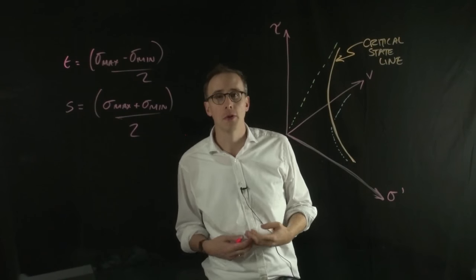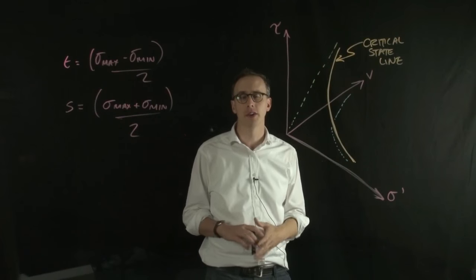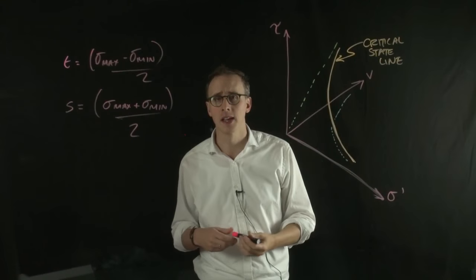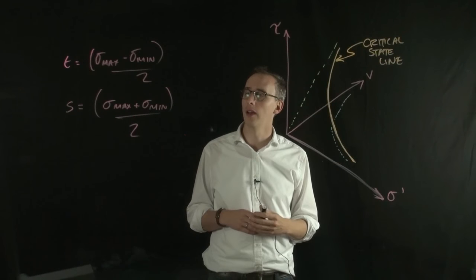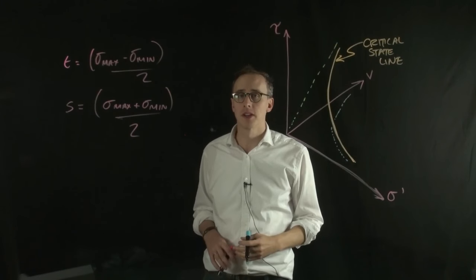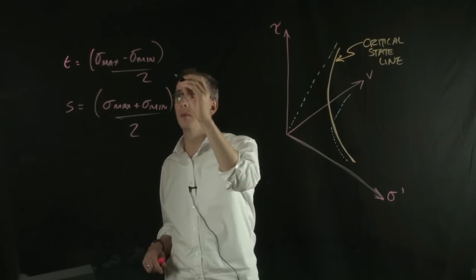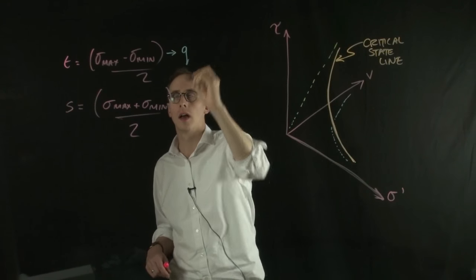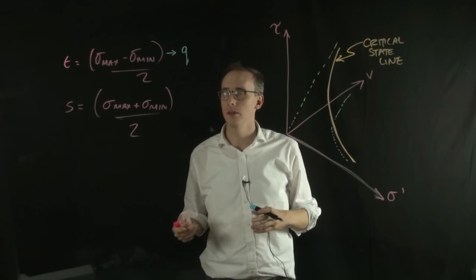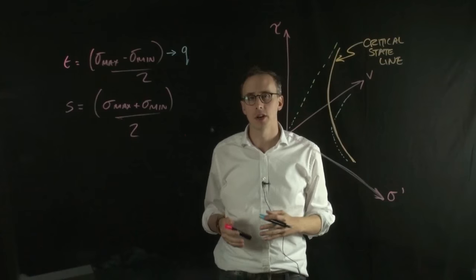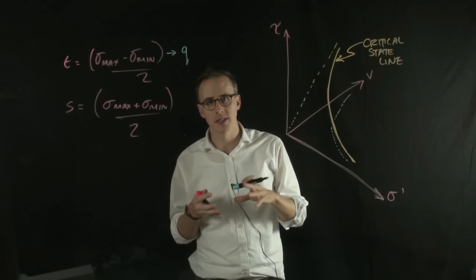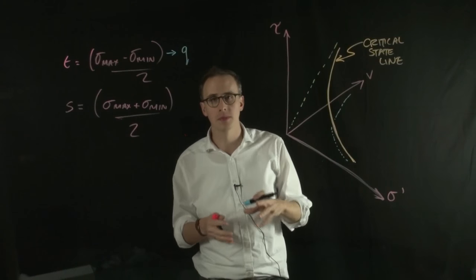Those are the two dimensional stress invariants, and those are appropriate when we're talking about conditions of plane strain. But when we're talking about conditions that aren't of plane strain, like in a triaxial test, we need to then bring in sigma 3, the intermediate principle stress. And there are two three-dimensional stress invariants. There's one called the deviatoric Q, which is essentially saying similar things to T here. What the deviatoric stress is, is the stress or the contribution of the stress that deforms the material.